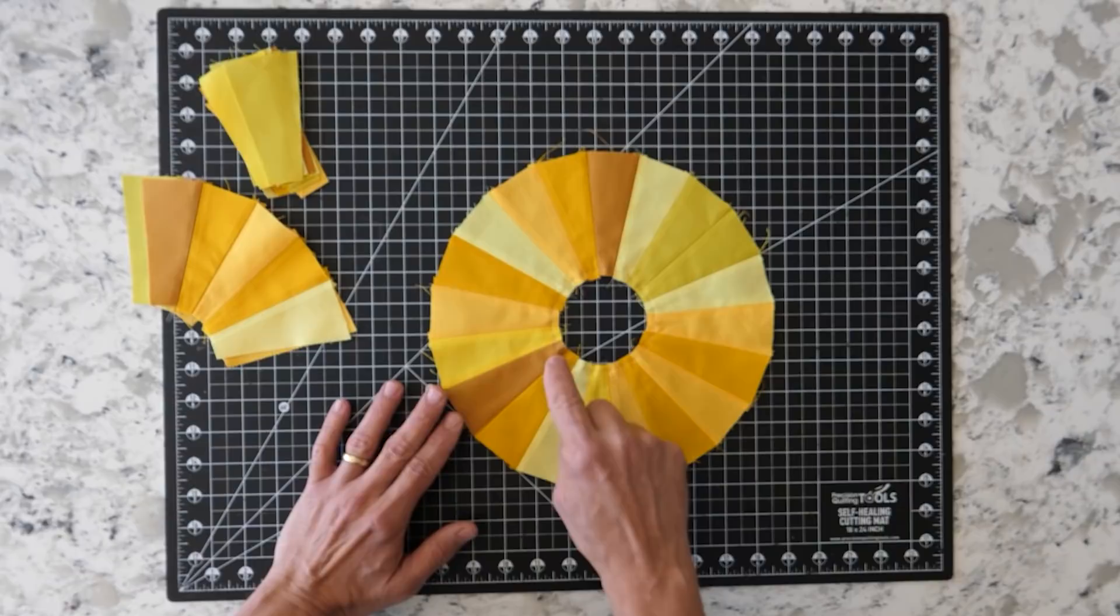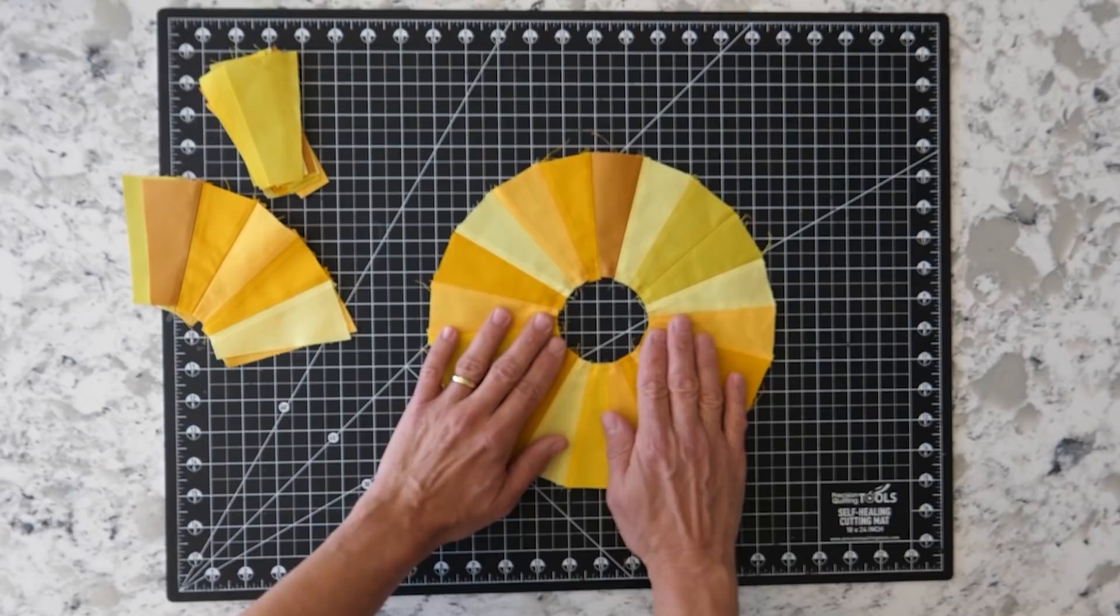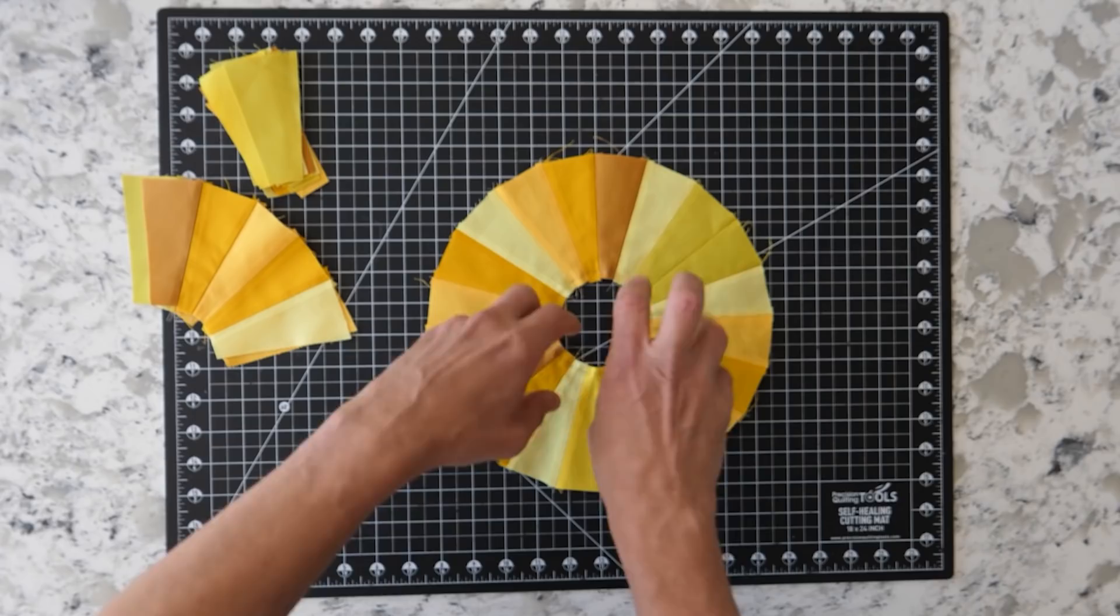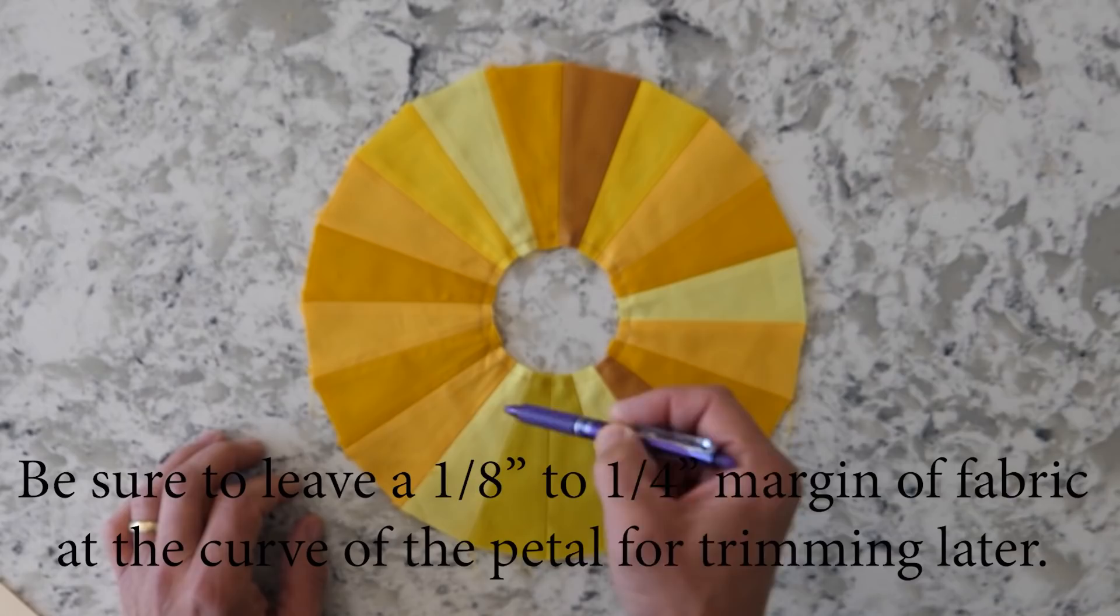Once you've done that, go ahead and stay stitch the inside edge. Stay stitch is simply a stitch that's put into the fabric to keep it from separating. Since we didn't backstitch on any of these, if we don't do that, these will tend to pull when we get ready to turn this face out.